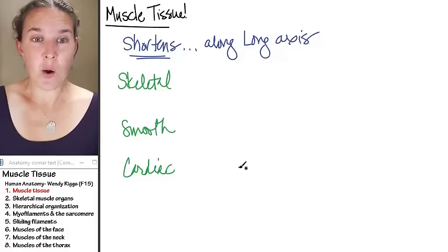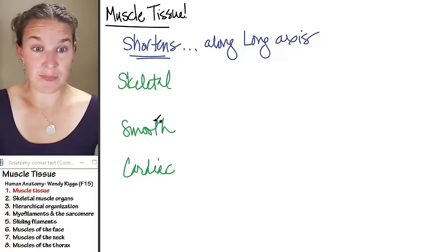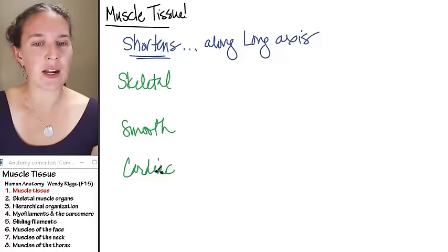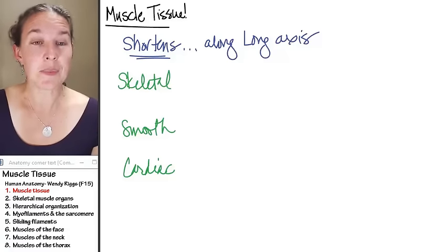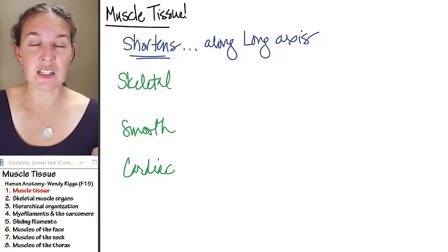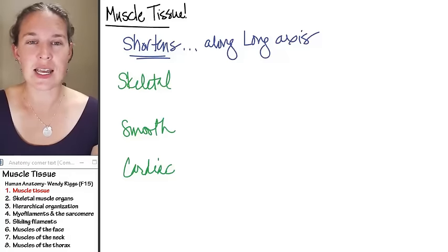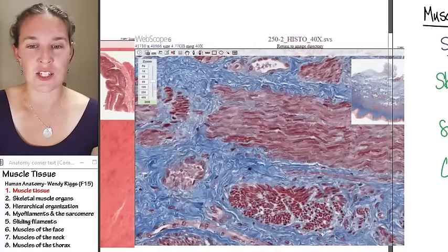Skeletal muscle we're going to talk about a ton. Smooth muscle we've already seen a little bit. Cardiac muscle we're only going to find in the heart. I'm going to talk about these muscle tissues quickly to give you some histological perspective, because today in lab we are going to look at these different kinds of tissues.